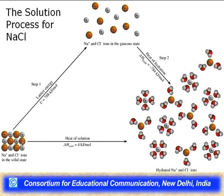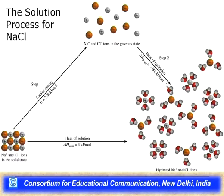The first step is a hypothetical path in which the crystal lattice is decomposed to give sodium ions and chloride ions in the gaseous state. For sodium chloride, we need to provide 788 kJ/mol of energy — the lattice energy — to obtain one mole of gaseous ions. In the second step, those gaseous ions get solvated, and the hydration energy is evolved as heat.